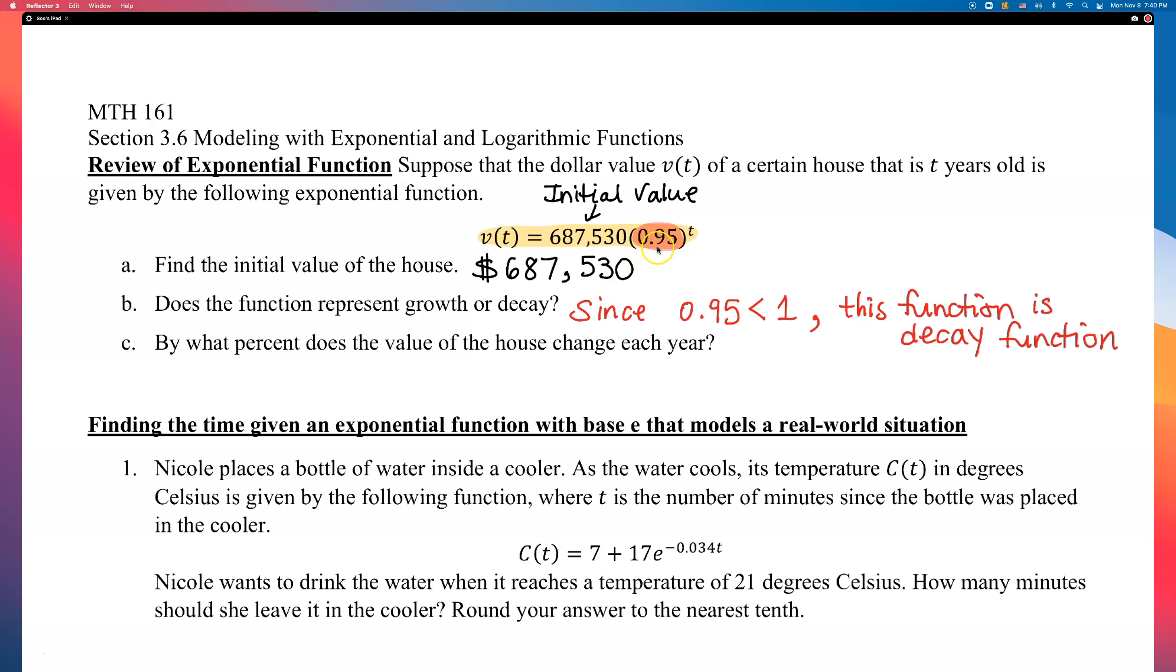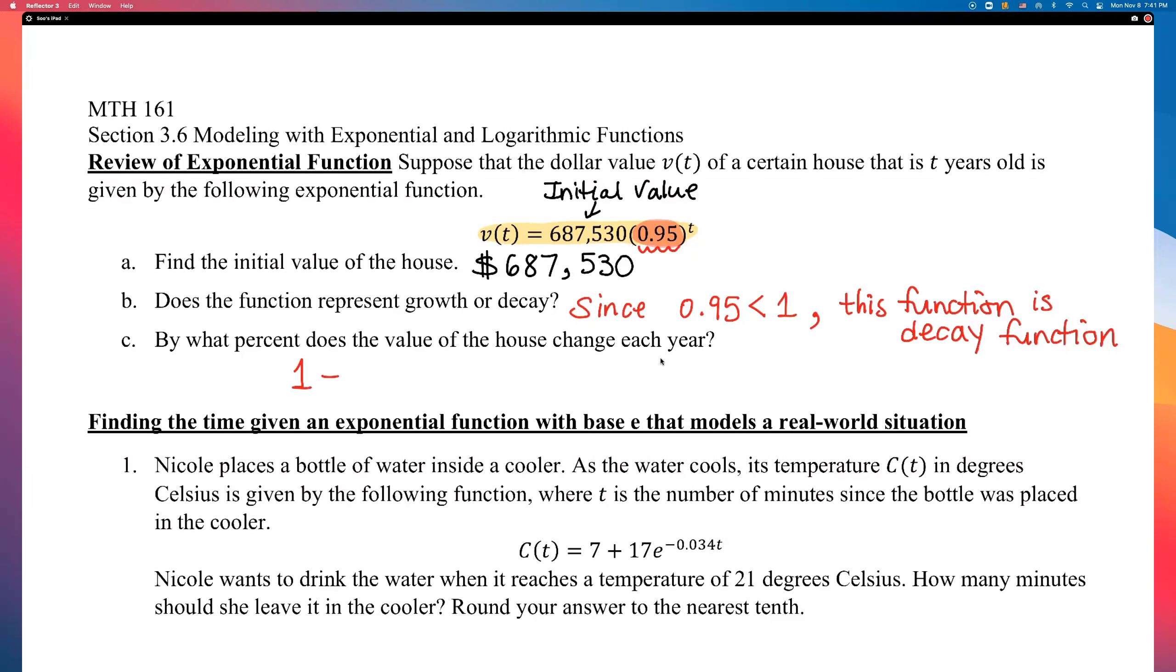So, every year, this house will be 95% of what it used to be in the previous year. So, it's going down by 5% each year, right? I think that's what part C is asking. By what percent does the value of the house change per each year? Because if we're looking at 95%, this decay factor of 0.95, we got it from doing 1 minus R equals 0.95, right? So, that means R must be equal to 0.05, and that is 5%. So, it's decreasing by 5% per year.